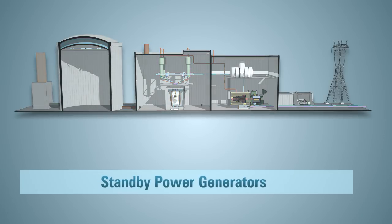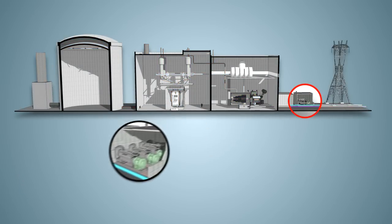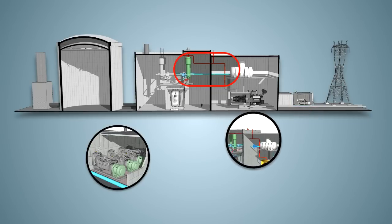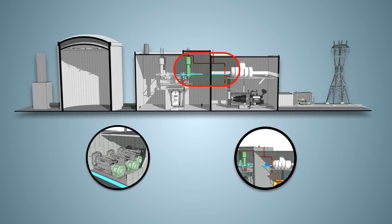Standby power generators operate pumps that provide this cool water to the steam generators. A nuclear power plant needs one or two standby power generators depending on the size of the plant. But as a precaution, all plants in Canada have three or four available.